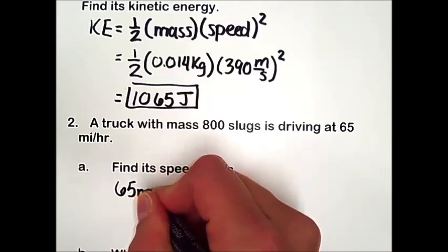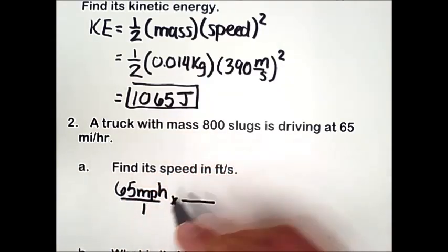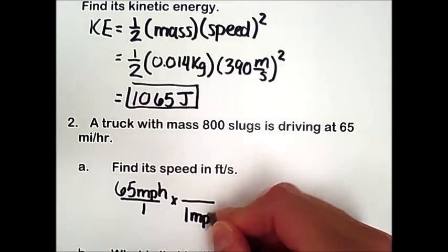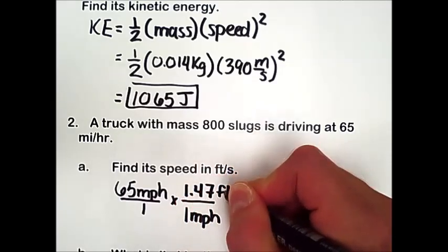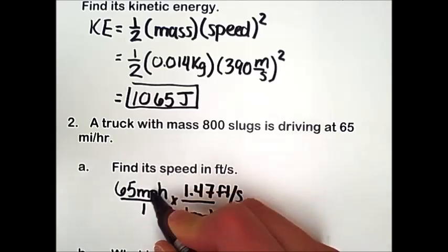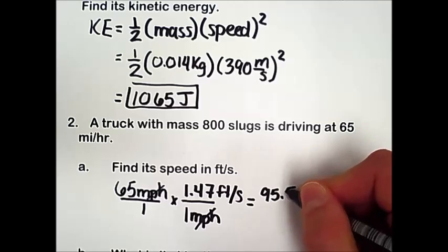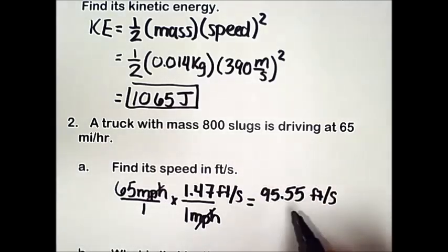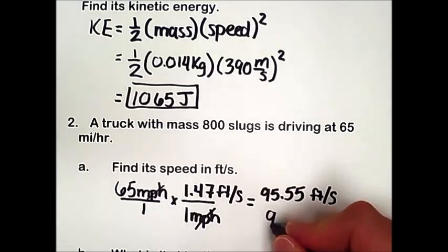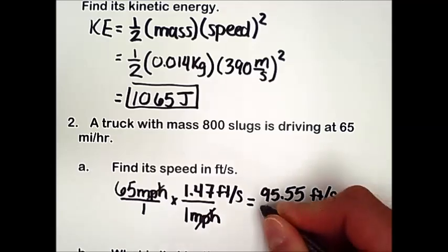We're going to take our 65 miles per hour, and then find a conversion factor for miles per hour to feet per second. On your tables, you see that 1 mile per hour is equal to 1.47 feet per second. Miles per hour cancel out, and we get about 95.55 feet per second, which, rounding to three significant digits, becomes about 95.6 feet per second.